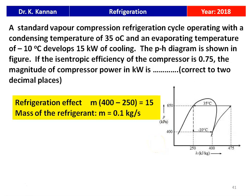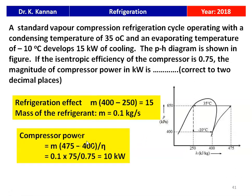Refrigeration effect equals mass flow rate multiplied by (400 minus 250) equals 15 kW, so mass flow rate equals 0.1 kg/s. Compressor power equals mass flow rate multiplied by (475 minus 400) divided by the isentropic efficiency: 0.1 multiplied by 75 divided by 0.75 equals 10 kilowatts. No calculator is required here. The compressor power is 10 kW.